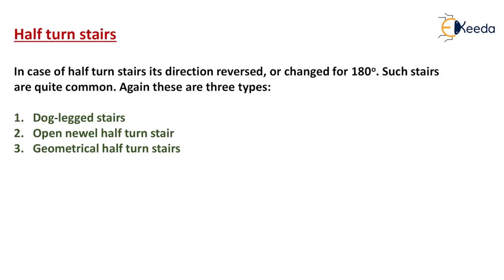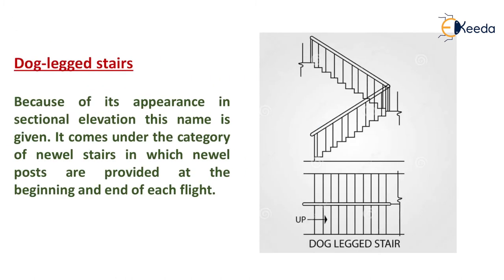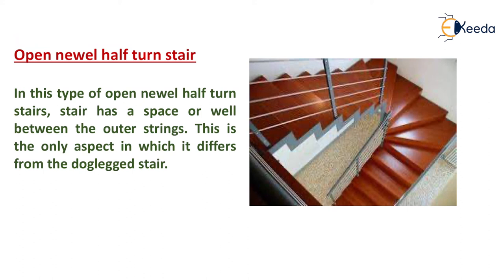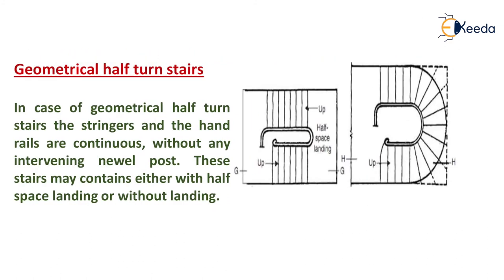In the case of half turn stairs, the direction is reversed or changed by 180 degrees. These are of three types: dog leg stairs, open newel half turn stairs, and geometrical half turn stairs. Dog leg stairs get their name from their appearance in sectional elevation; newel posts are provided at the beginning and end of each flight. In open newel half turn stairs, there is a space or well between the outer strings — this is the only aspect in which it differs from the dog leg stairs.